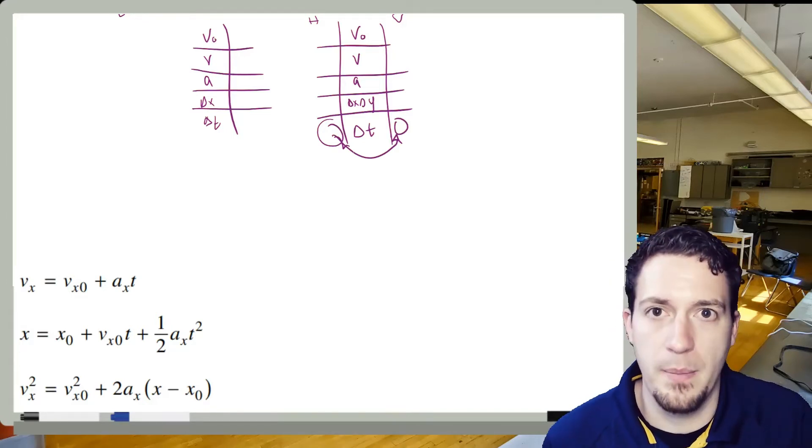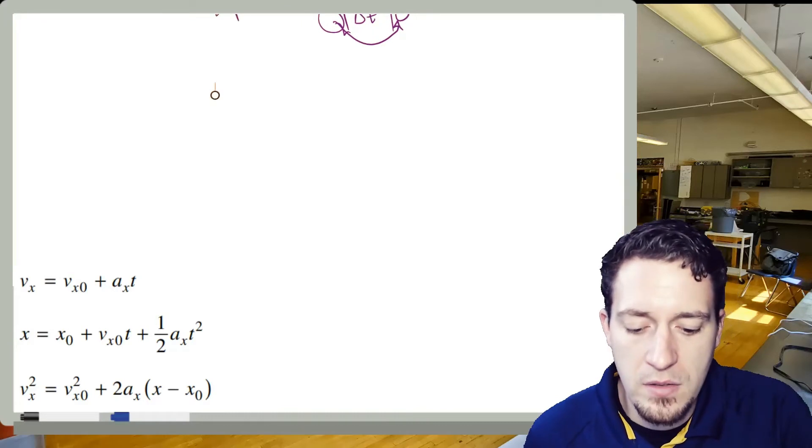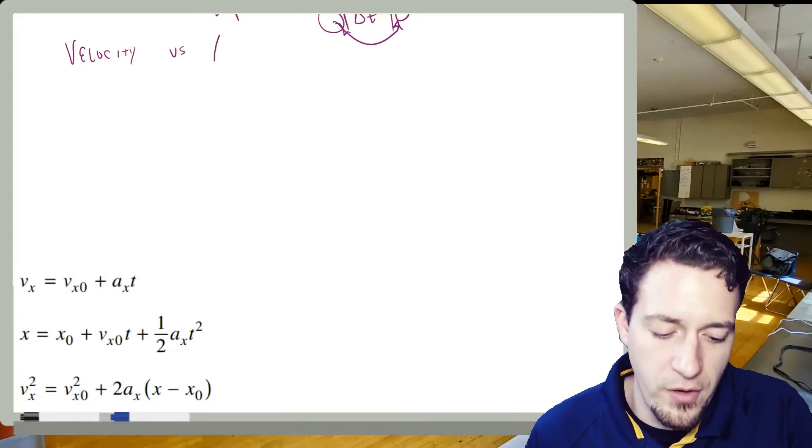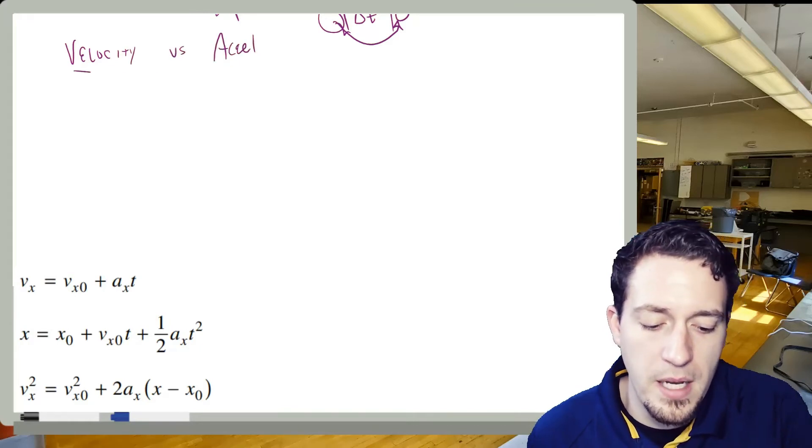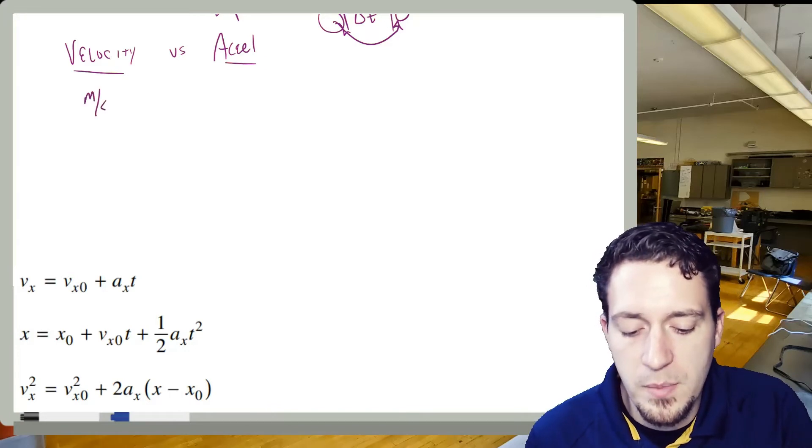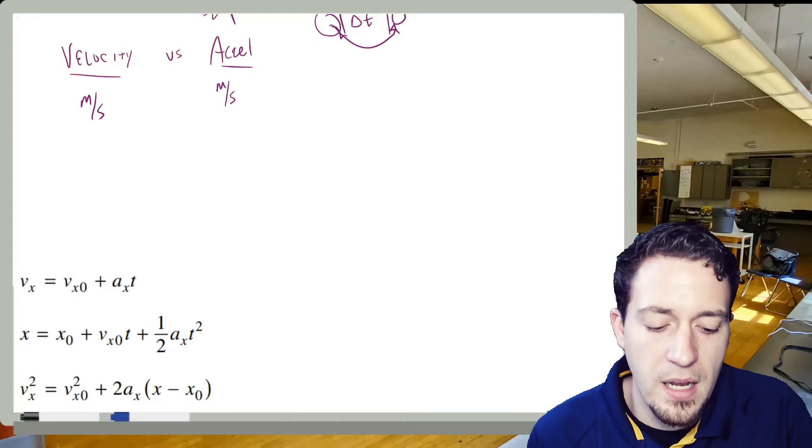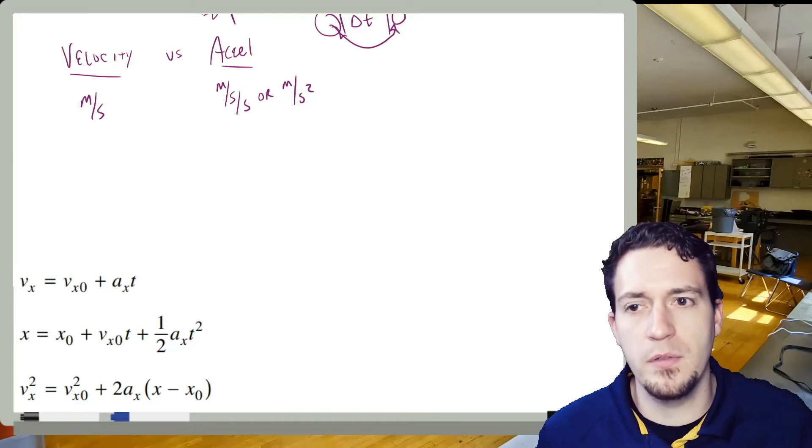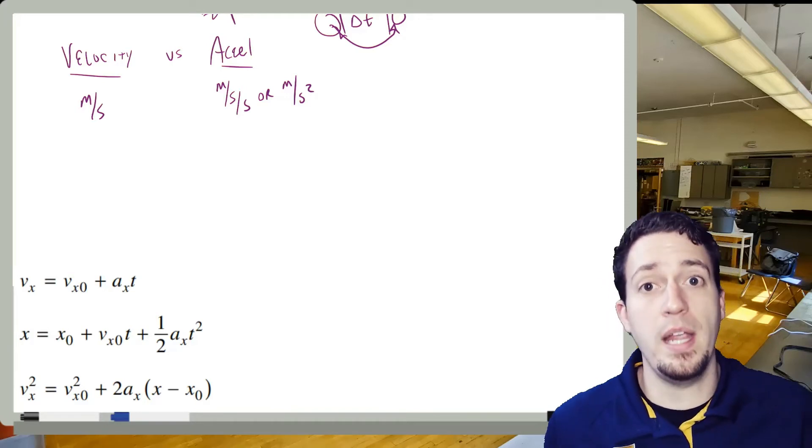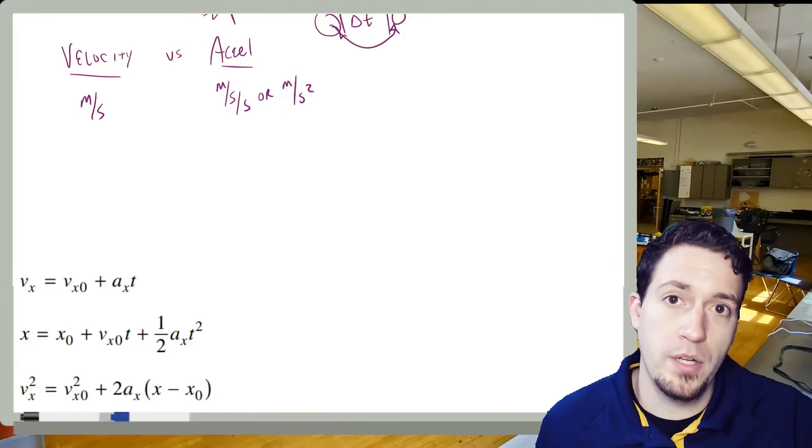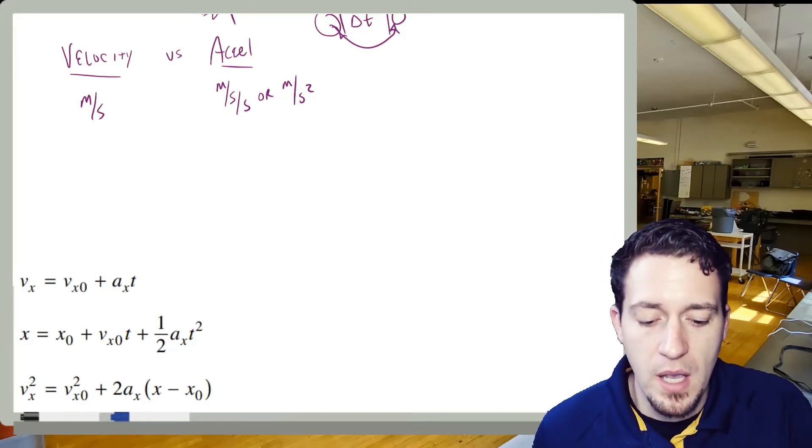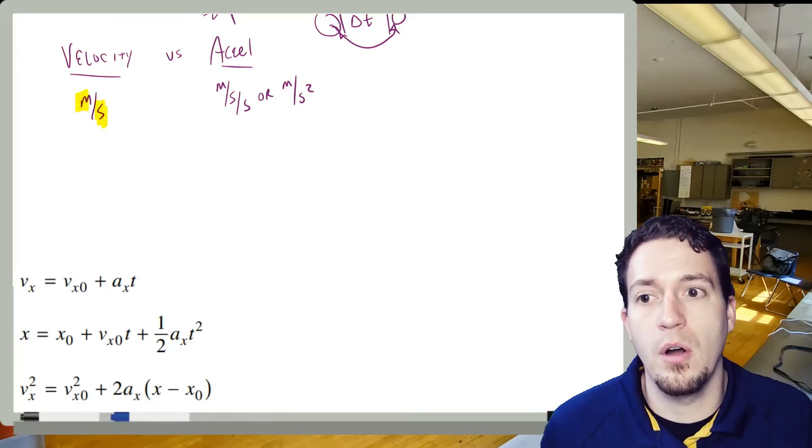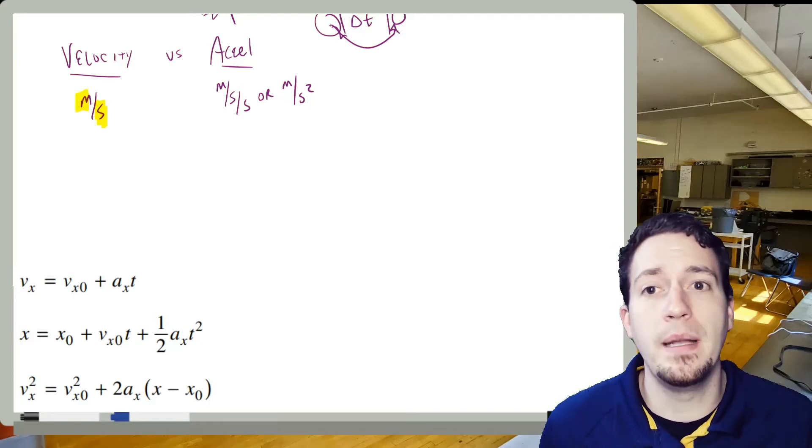Something I think we should talk a little bit about before we get too much further into this is velocity and acceleration. Now, velocity and acceleration are different. And we can think about this in many different ways. And one way might be the units. So velocity is meters per second and acceleration is meters per second per second, or sometimes written as meters per second squared. So you can see that there's a fundamental difference between them. We had described velocity as rate of motion. Okay, so it's the rate at which the motion is changing. And if we were to try to speak these out, for every second, it's how many meters are traveled.